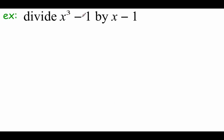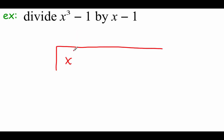Next example: we're going to take x cubed minus 1 and divide it by x minus 1. Before we start this division, there's a little bit of an issue — x cubed minus 1 is missing some terms. It doesn't have an x squared term, and it doesn't have an x to the first power term. So when we write this out underneath our division symbol, we need to fill in those places with 0 placeholders: 0x squared and 0x. We need to remember to fill in those zeros because it makes the division and subtraction so much easier.